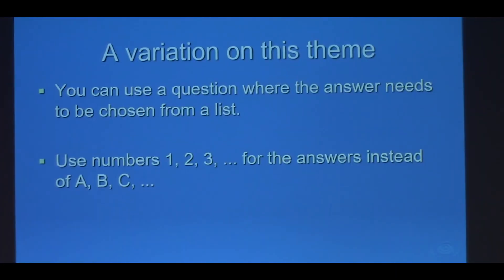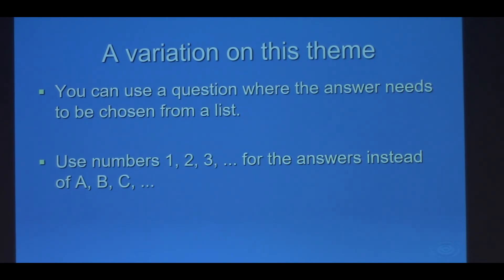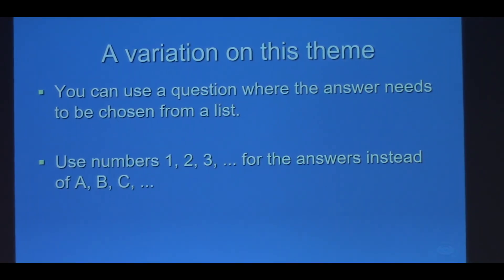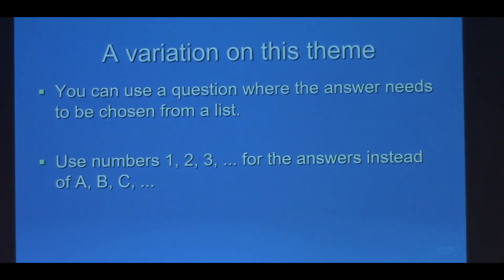A variation on this theme would be a multiple choice question. Suppose you have a multiple choice question. Don't use A, B, C, or D. Use one, two, three, four, or five. Give the right answer one, two, three, or four, depending upon the version. So you have a multiple choice question where the answer changes depending upon which version of the multiple choice question they got in the first place.